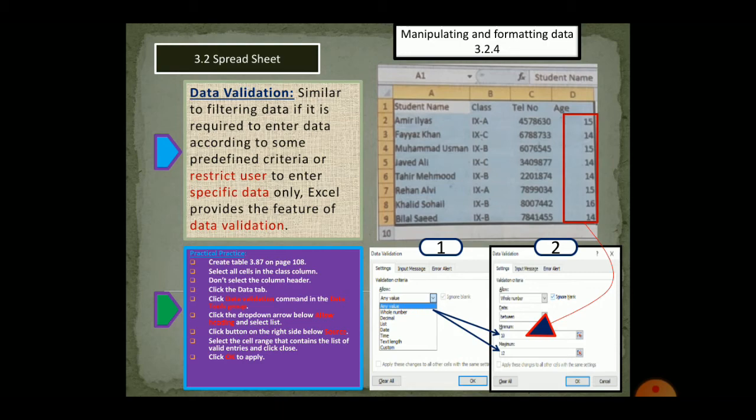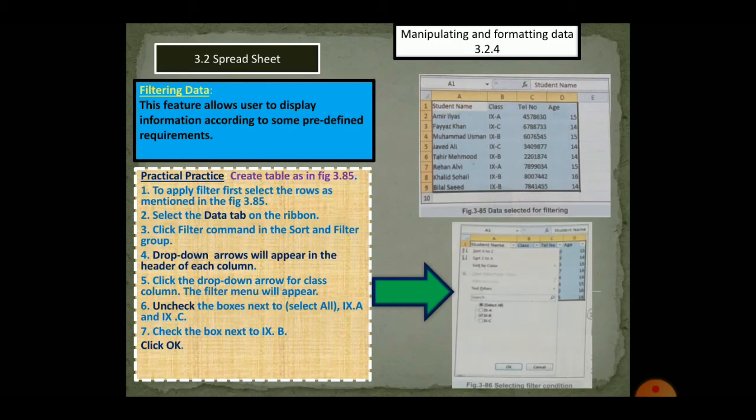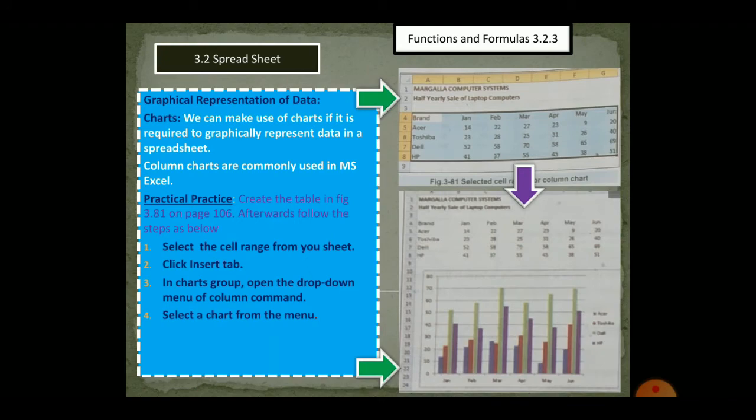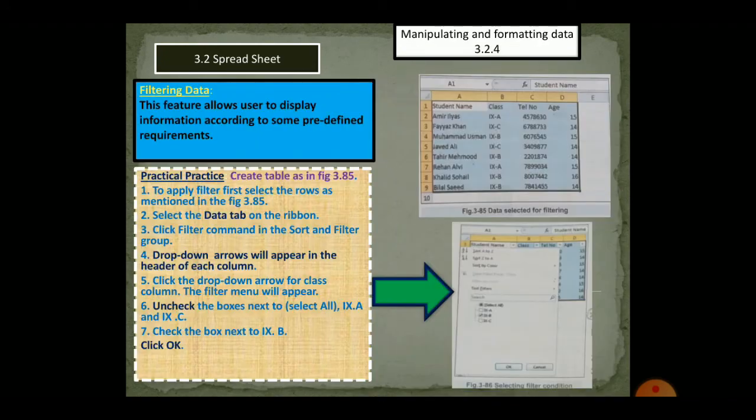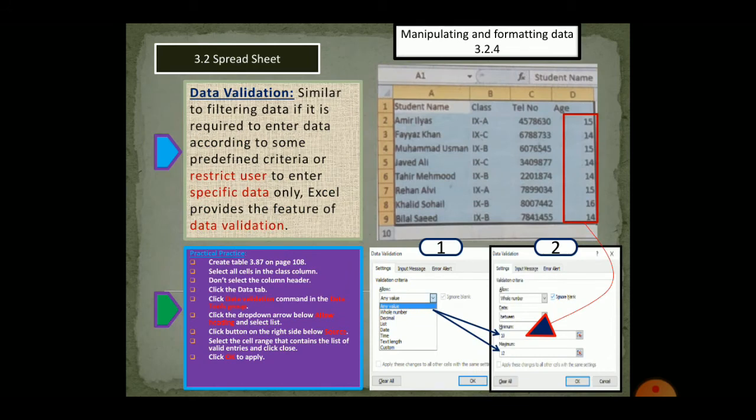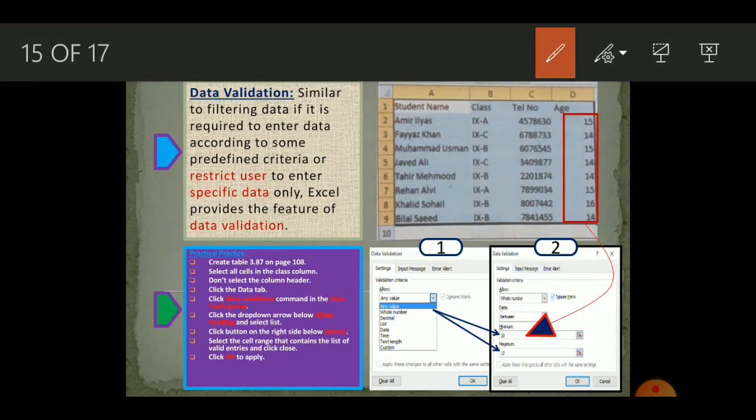For that, you have to create this table or you can use the previous table for this purpose. Once you have created this table, select the cells under the age heading and do not enter these values yet before applying the function. Keep this cell empty, just select it. After you have selected, go through the steps to apply the function.